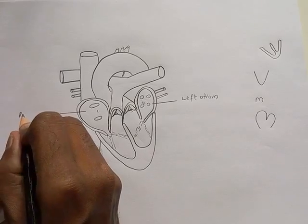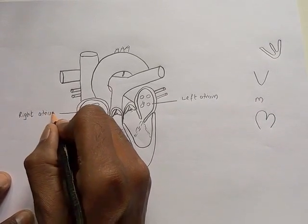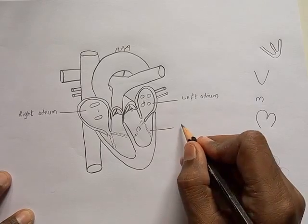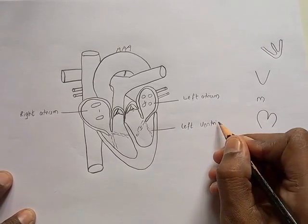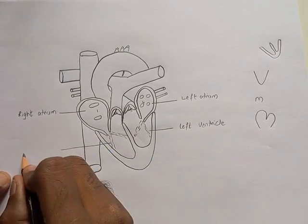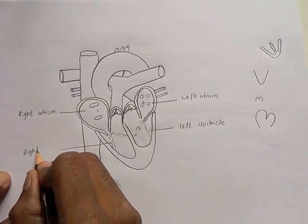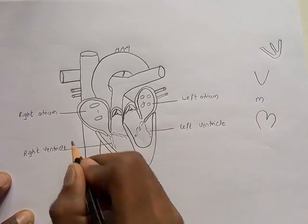This part is called right atrium. The lower one will be ventricle, so we call it left ventricle. Left ventricle is small but it is thicker as compared to right ventricle.